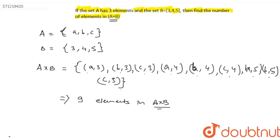We also have a short method. We have the formula for calculating the number of elements in A×B. So the number of elements in A×B is equal to number of elements in A into the number of elements in B.